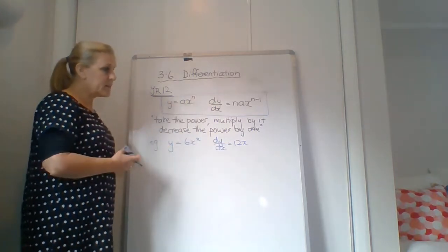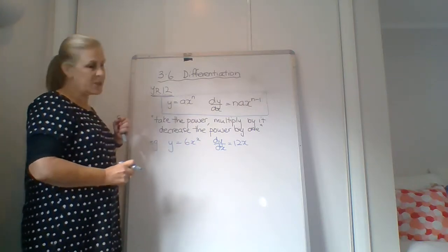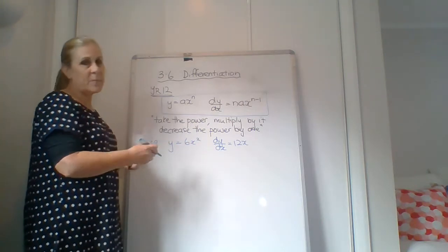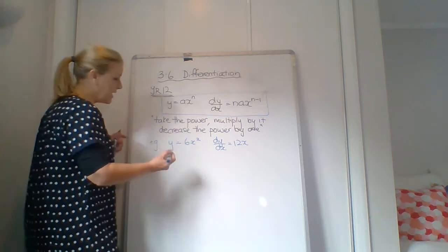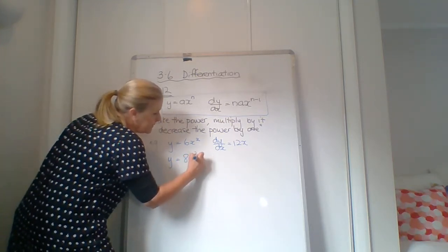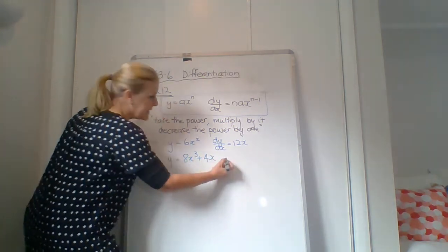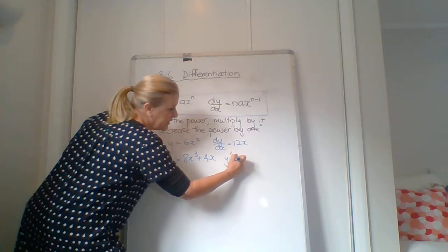So we get 12x. Now, this notation here is called the Leibniz notation. You can write it that way, but there's also lots of other ways. And so last year, you probably learned to write it something like this. Alright. Y dash equals.